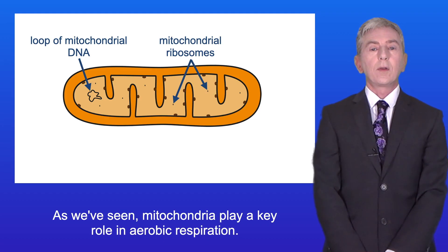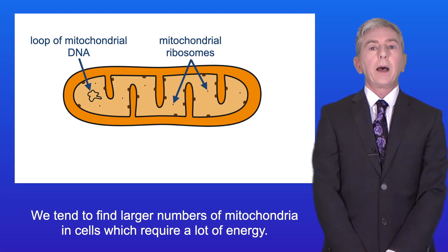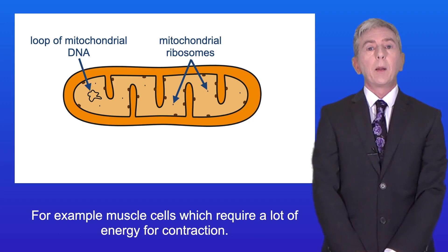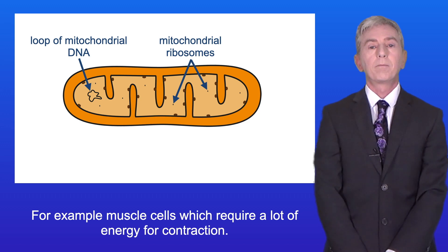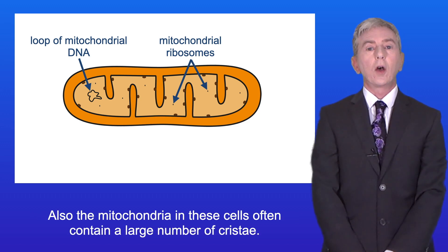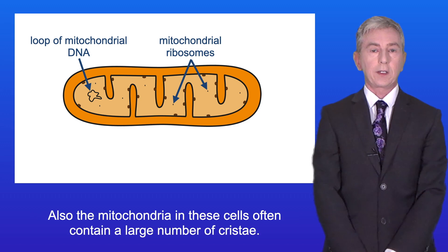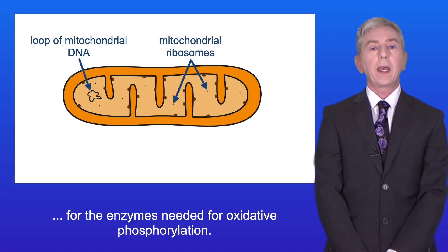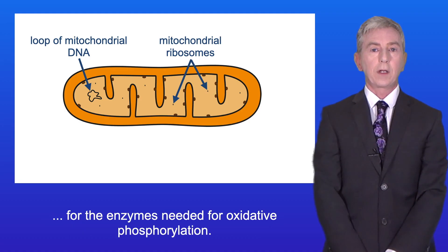Mitochondria play a key role in aerobic respiration and we tend to find larger numbers of mitochondria in cells which require a lot of energy — for example muscle cells which require a lot of energy for contraction. The mitochondria in these cells often contain a large number of cristae, which provides an increased surface area for the enzymes needed for oxidative phosphorylation.